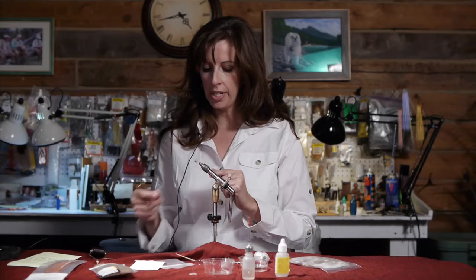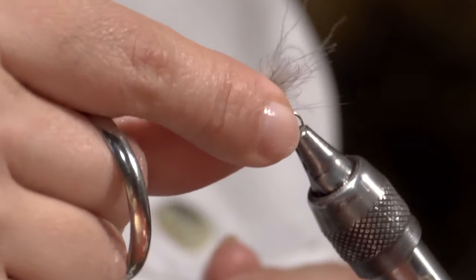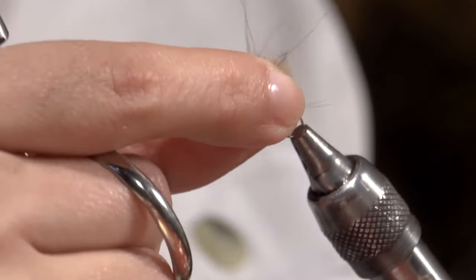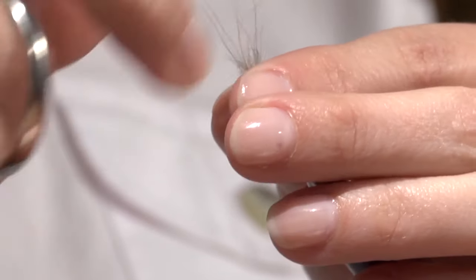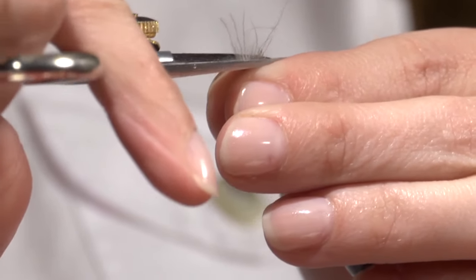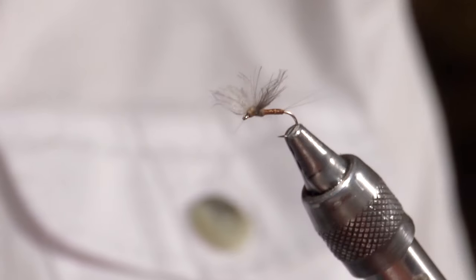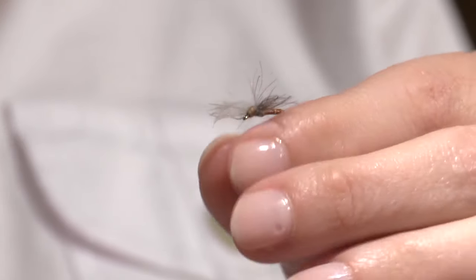And to trim up my wings, I pull all the CDC up top with my fingers, I pinch it off, and I give it one good snip to trim it up, to make it even on both sides.